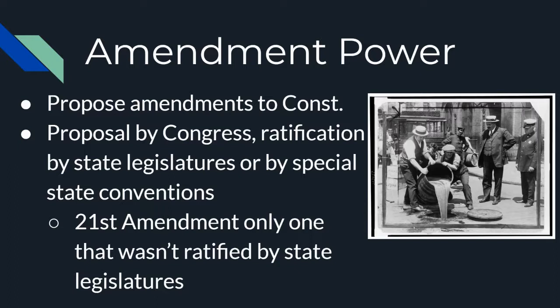Next and finally, we have our amendment power. We have talked about this process before when discussing the text of the Constitution. Congress has the power to propose amendments, followed by ratification either by state legislatures or by special state conventions — the 21st Amendment is the only one ratified through conventions rather than state legislatures. This wraps up our powers of Congress. Hopefully you were able to see some parallels between these powers and what you have read in the text. Please feel free to reach out to Ms. Robinson with any questions.